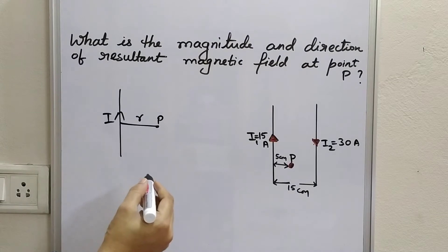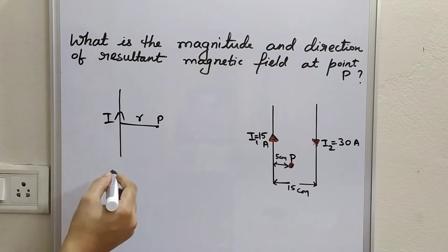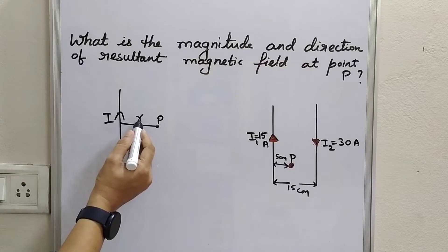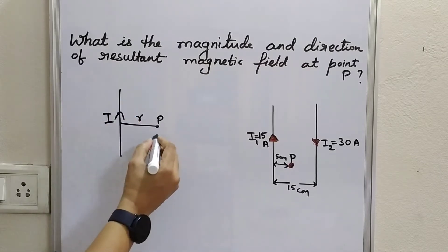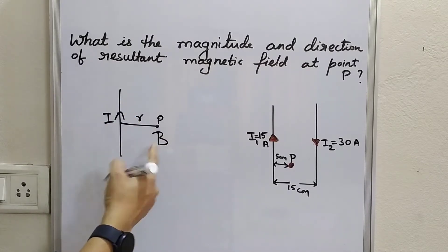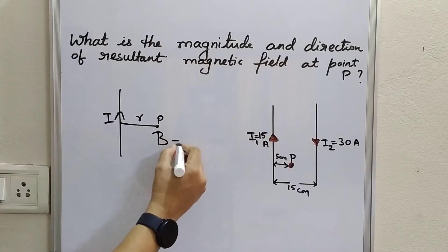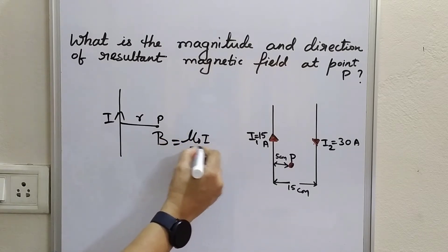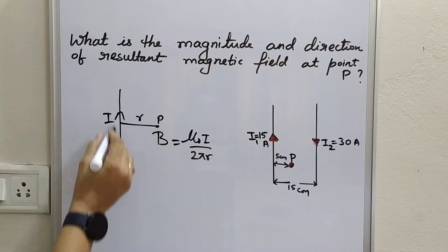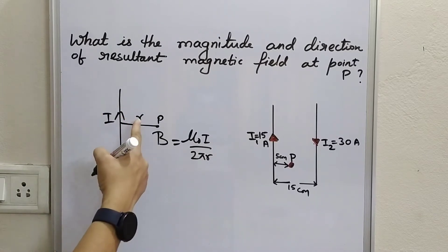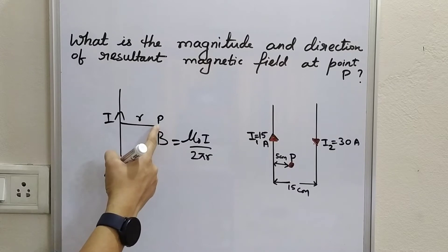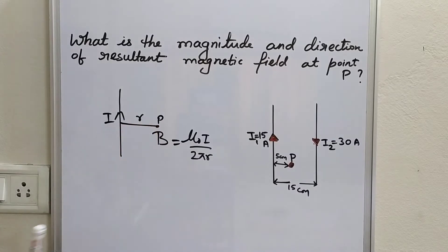As we have learnt in the previous video, the magnetic field strength at a distance R from a straight current-carrying conductor is given by B = μ₀I / 2πR, where I is the magnitude of current in the conductor and R is the distance of the point of observation from the conductor.